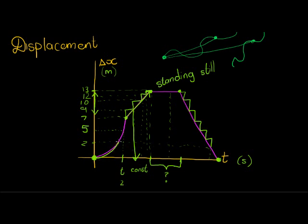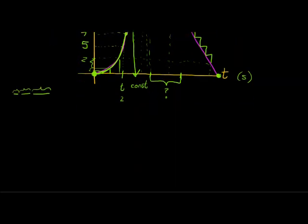Here we see a curved shape. Initially displacement changes only a little bit over a short time gap, but if I take another gap of the same size, displacement changes more. So first displacement is small, then a little bigger, then bigger still. If each gap represents one second, it means the object is speeding up — moving away from where it started faster and faster. That means it's accelerating.